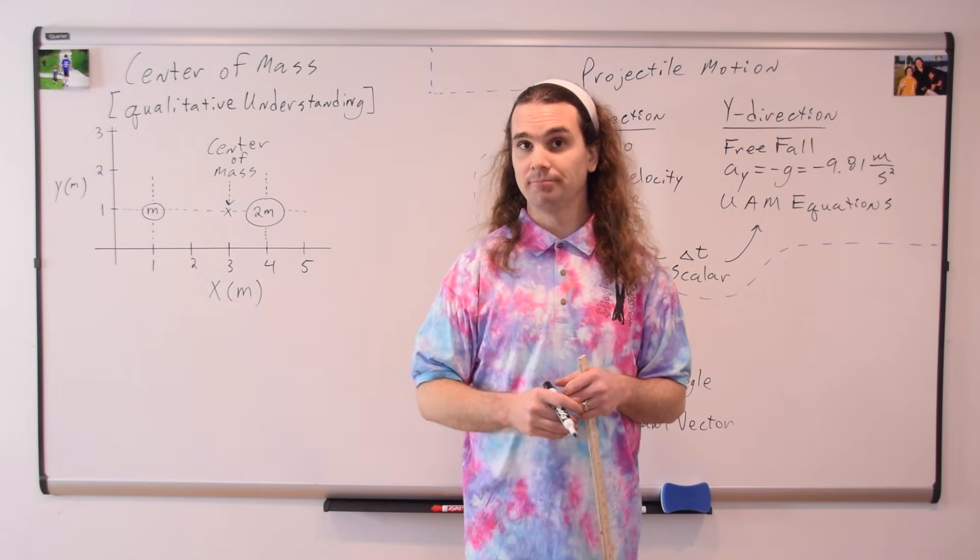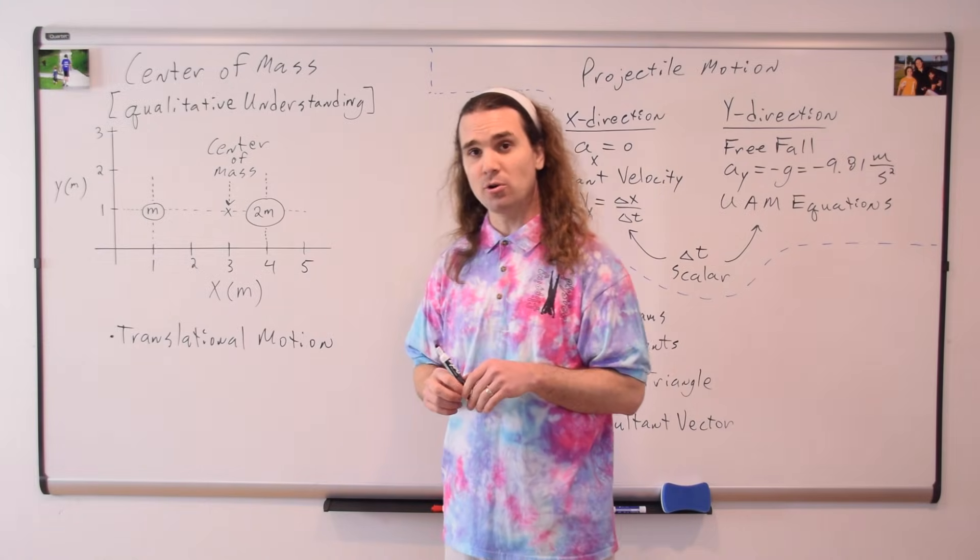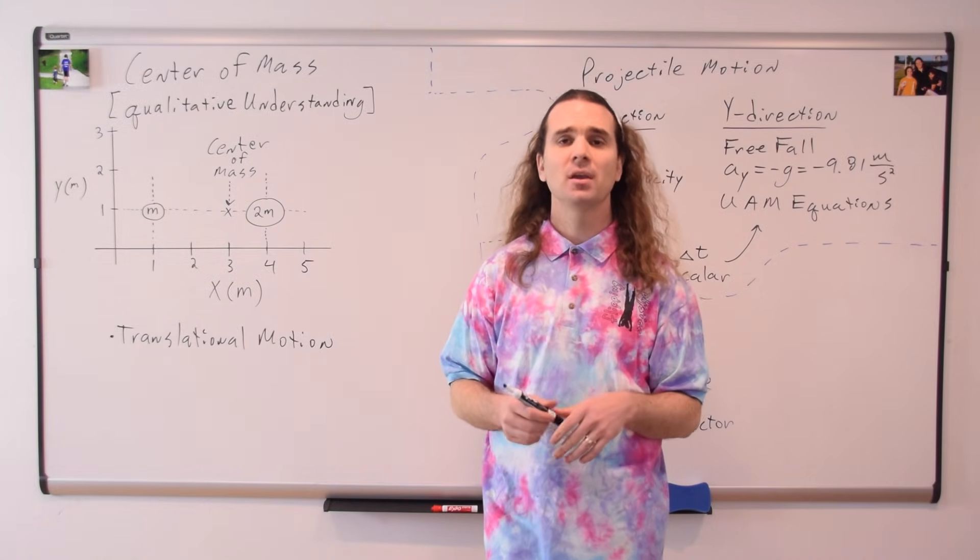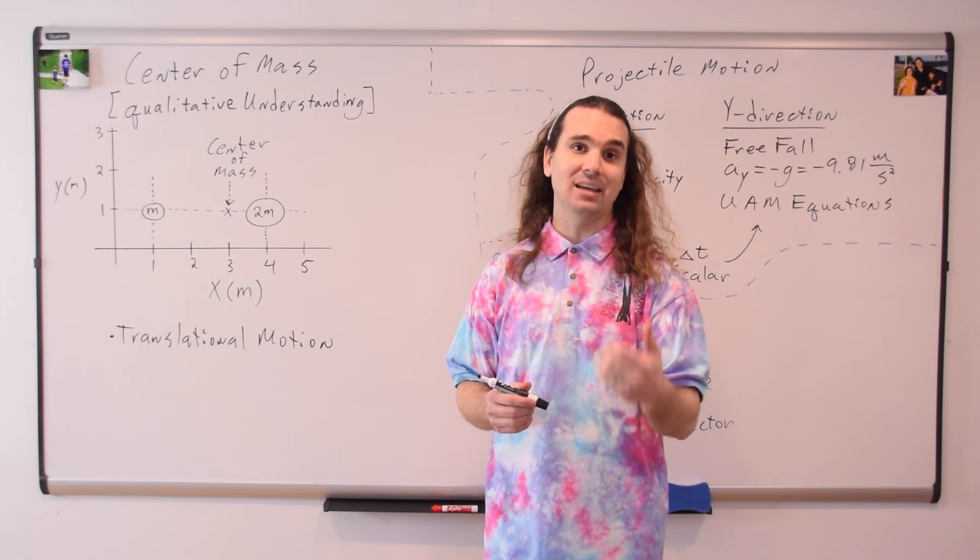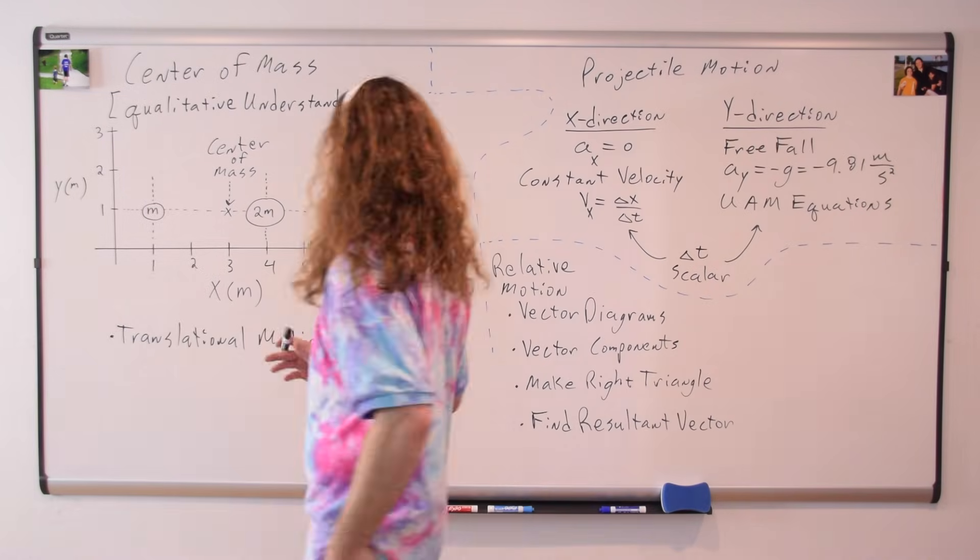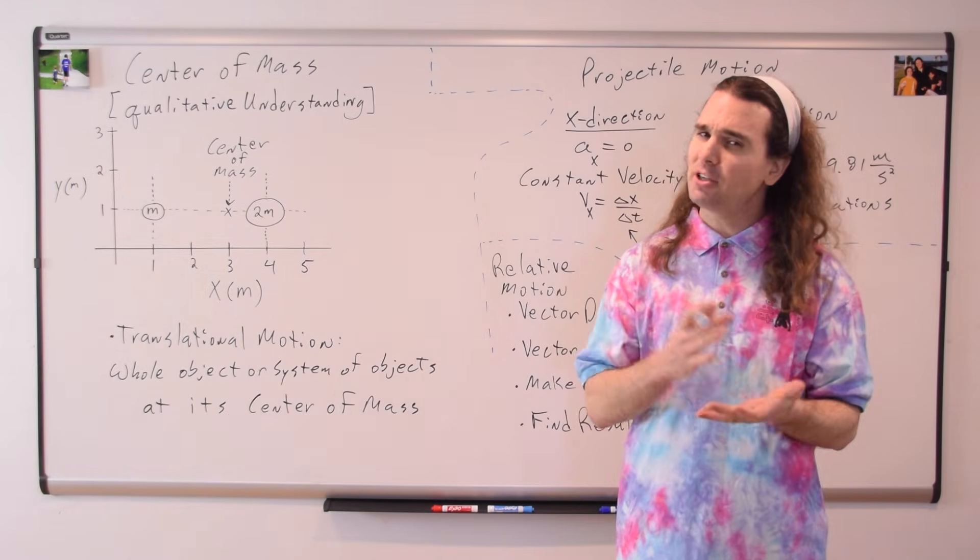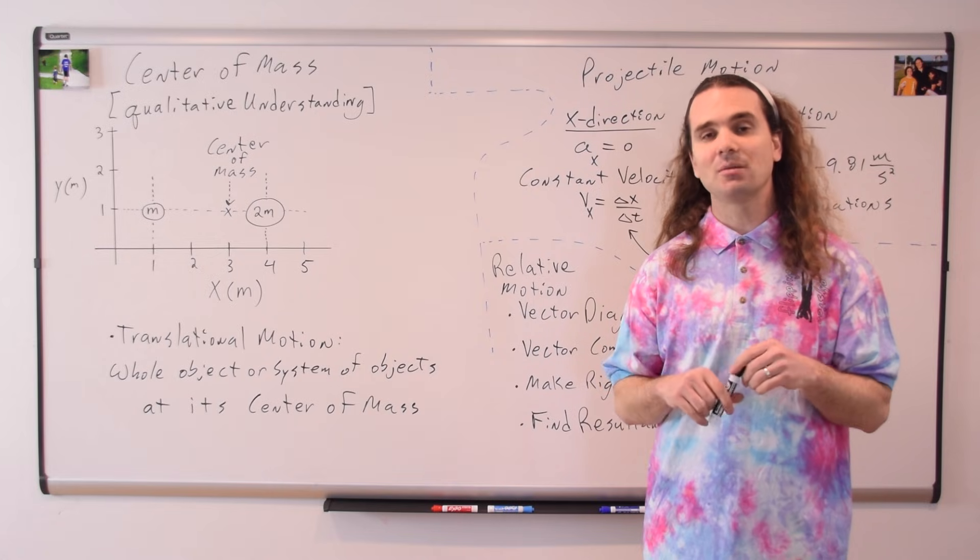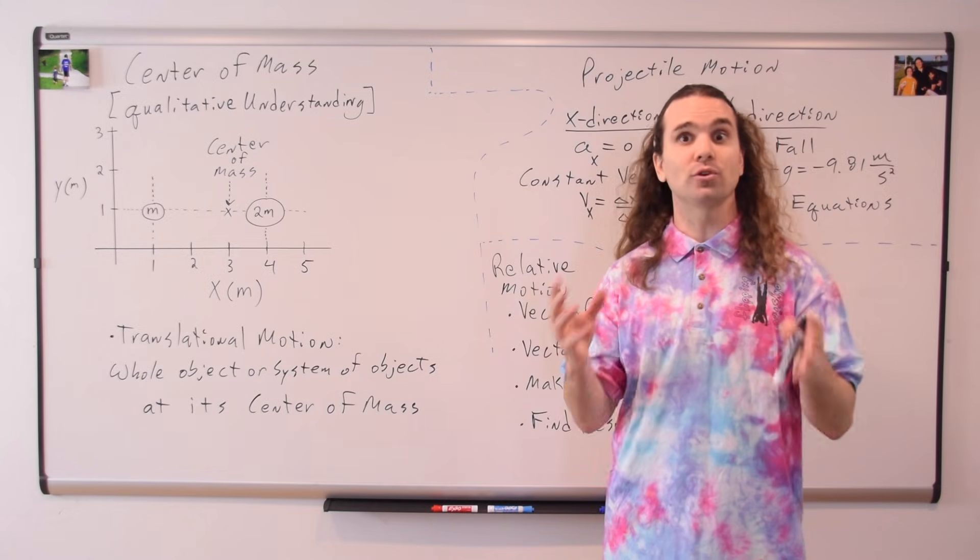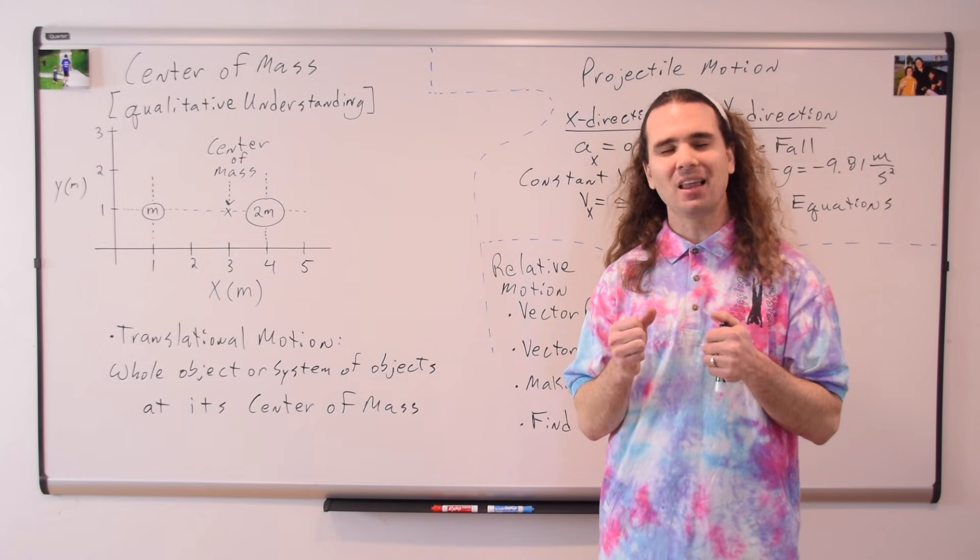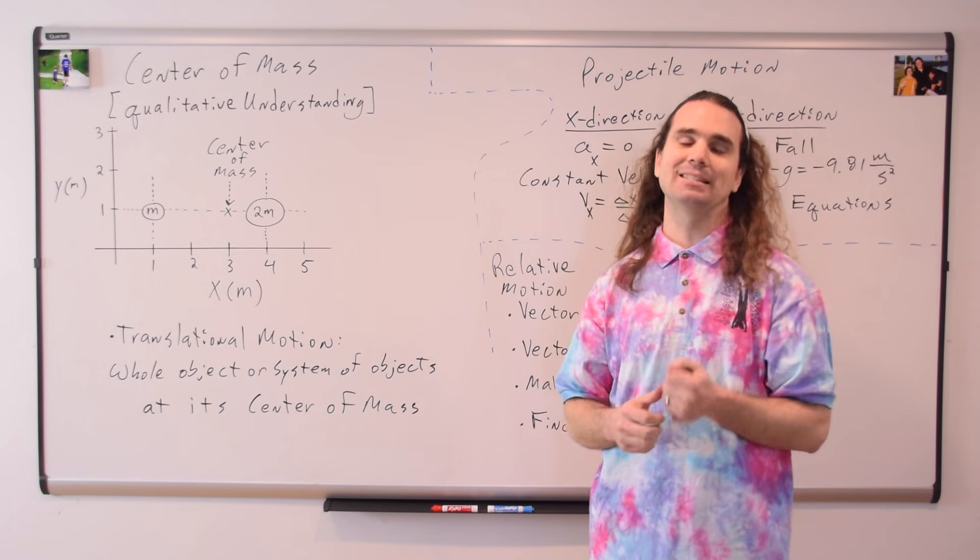I guess you should also know, for the purposes of translational motion, which is essentially non-rotational motion, the whole object, or the system of objects, can be considered to be located at its center of mass. For example, an object or a group of objects in projectile motion is described by analyzing the motion of the center of mass of the object or the group of objects, rather than analyzing the motion of each individual part of the object, or each individual object in the system.